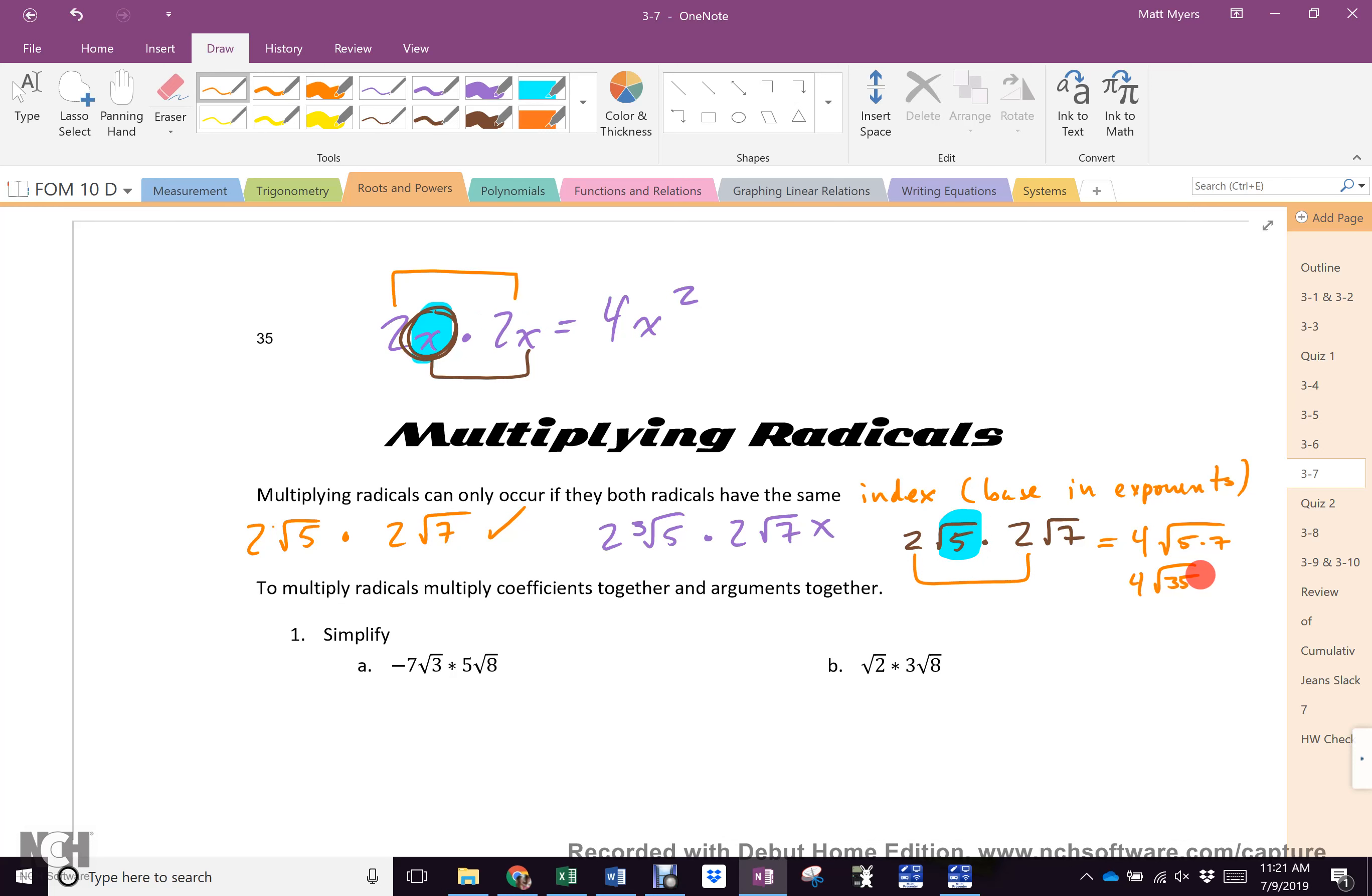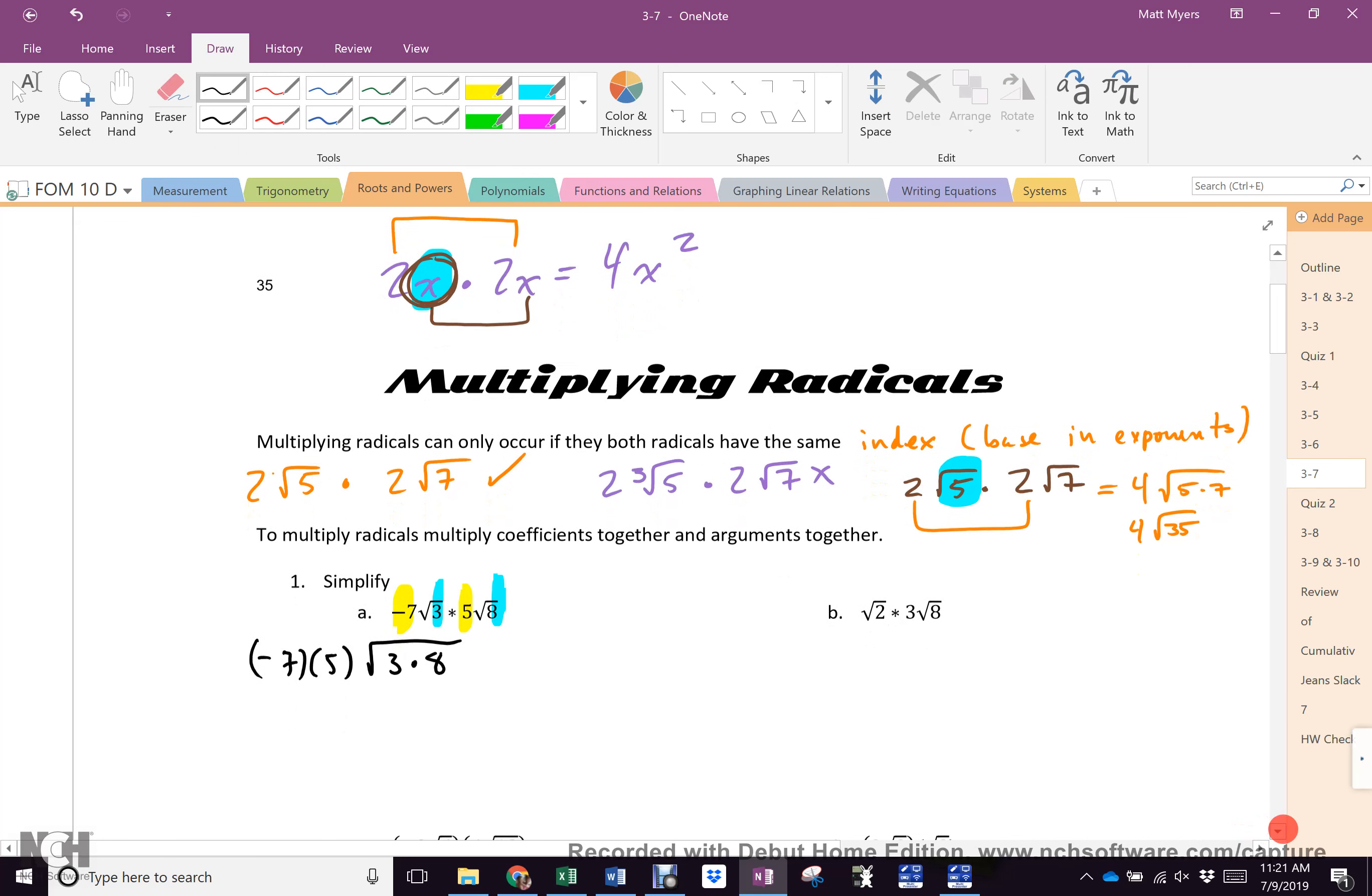Except, just like when you're multiplying fractions, what do you need to do at the end? Simplify. Right? The number 1 word in all math from grade 1 on is simplify. Don't stop until it is as simple as it can get. So, we look at this very first one. It's so easy. The numbers go with the numbers. The letters go with the letters. And we get negative 35 root. Oh, you know what? I'm going to write it out the long way.